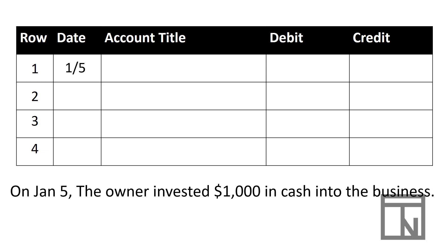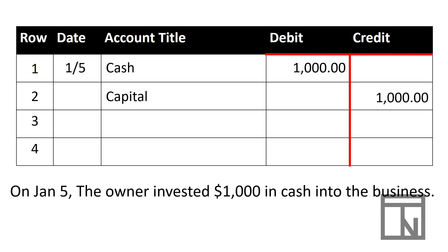The next part is to record the two accounts. Although technically it doesn't matter which account goes on top, traditionally accountants always put the debit accounts first followed by the credit accounts. So we begin with our debit account, which was cash, and then our credit account, which was capital. For the dollar amounts, the debit numbers go on the left side and the credit numbers go on the right — just like a T-account. Cash was a debit, so we put a thousand dollars on the left side. Capital was a credit, so we put the thousand dollars on the right side.